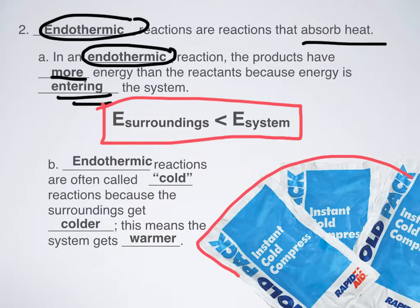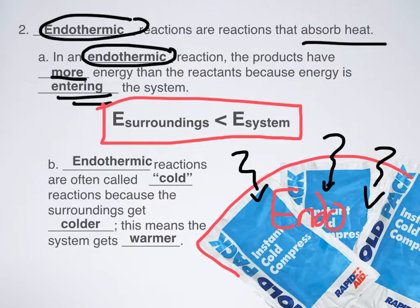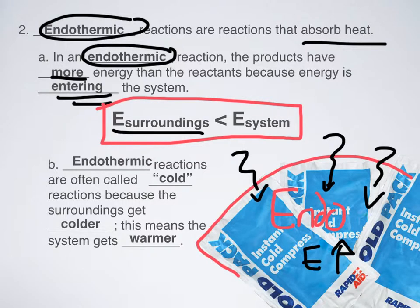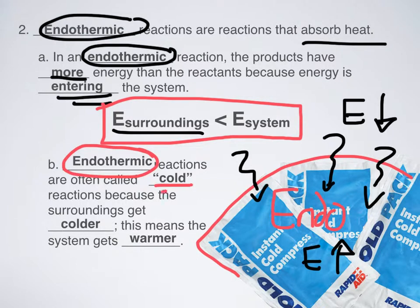If you've ever used an instant cold pack, they work off the principle of endothermic reactions. The reason it feels cold to us is because energy is leaving us and going inside the cold pack. Things feel cold because we are warmer and they have less heat, so heat flows from us to the cooler object. That's why endothermic reactions feel cold to us — because we are part of the surroundings, not the system. From the system's perspective, energy is going up; from the surroundings' perspective, it's going down.